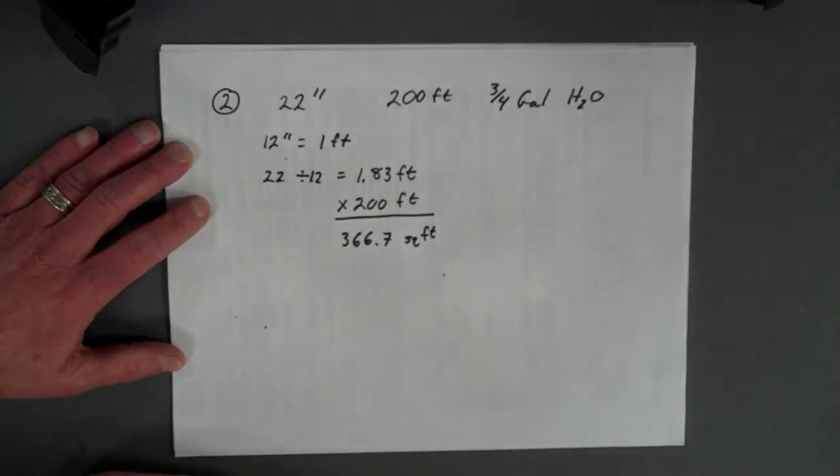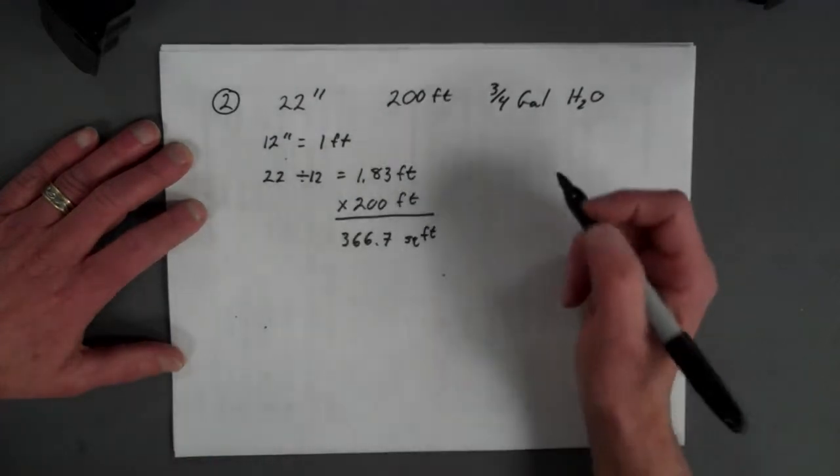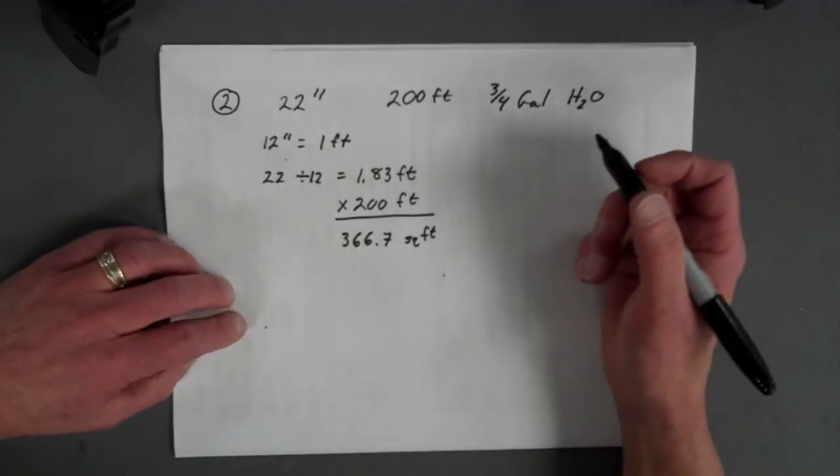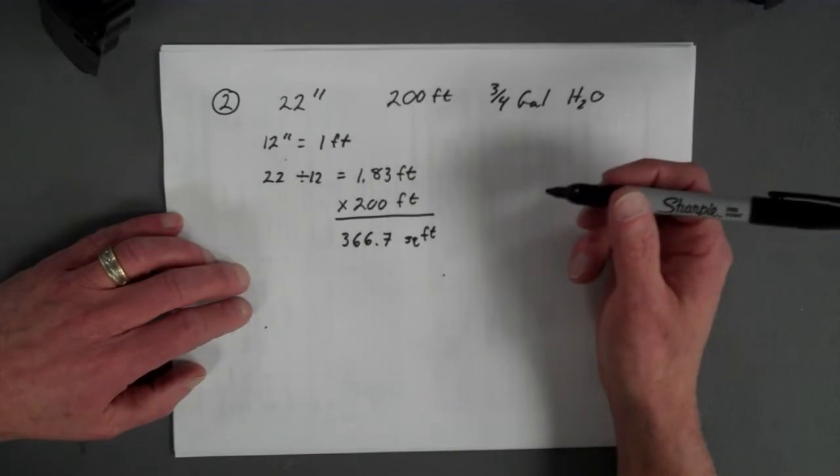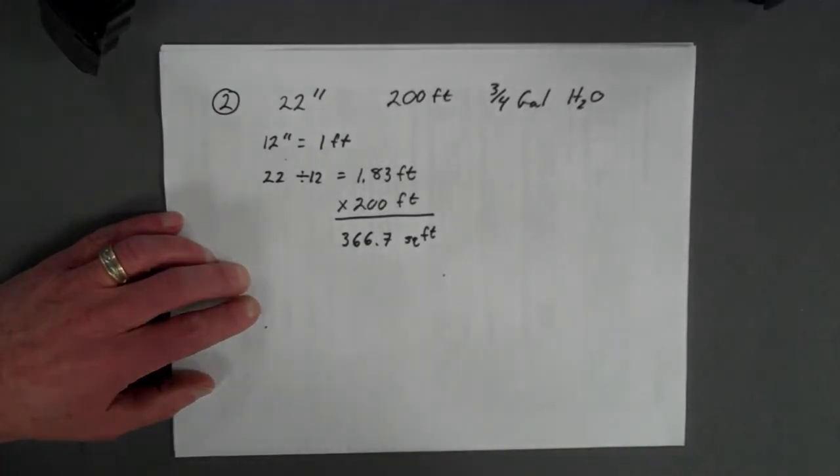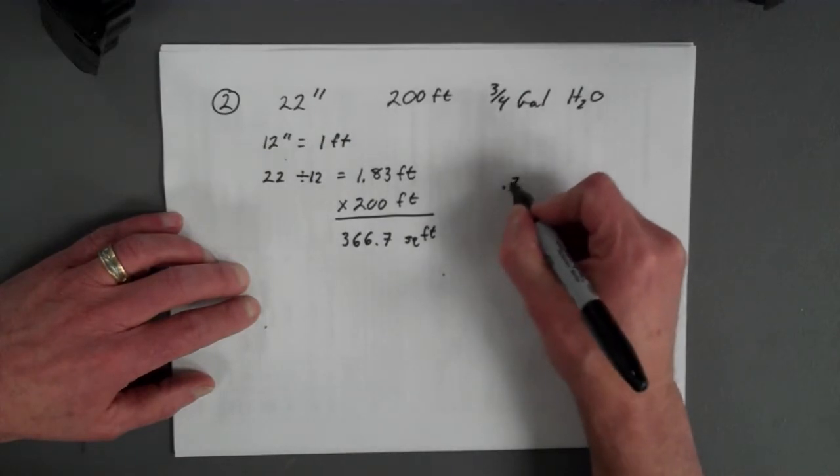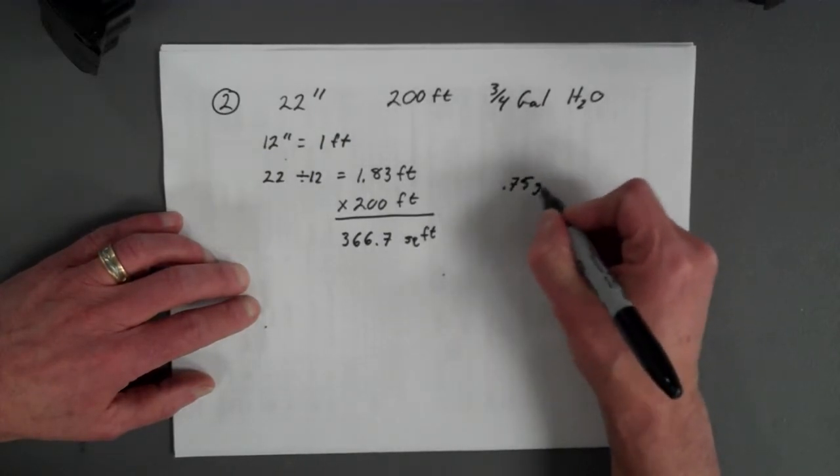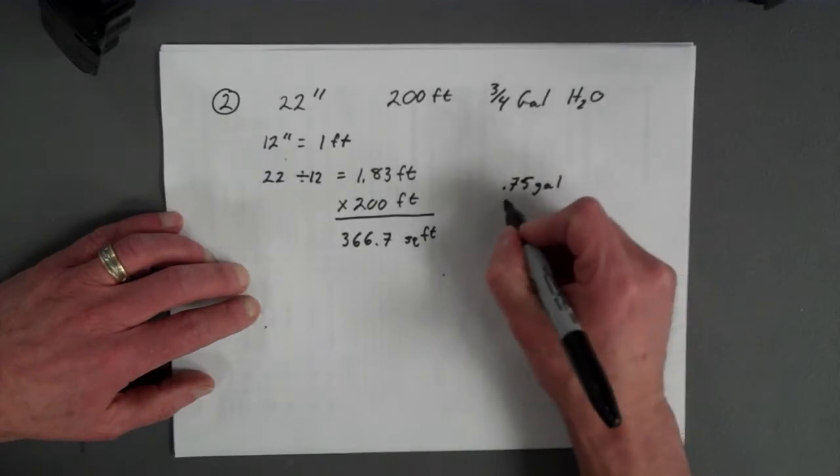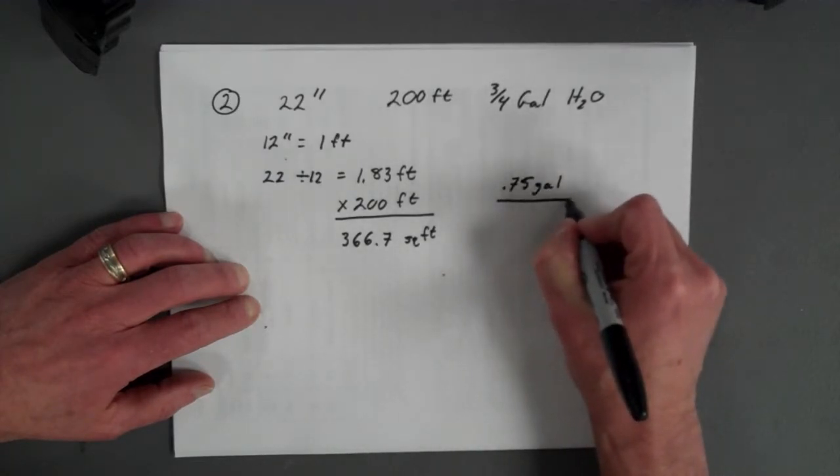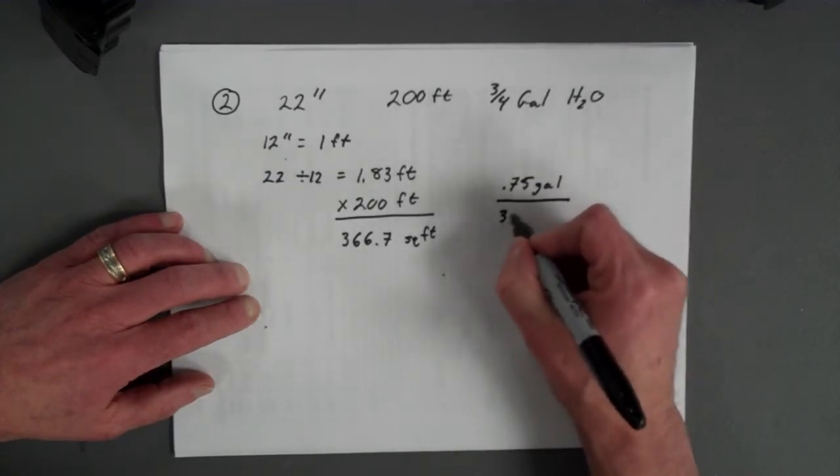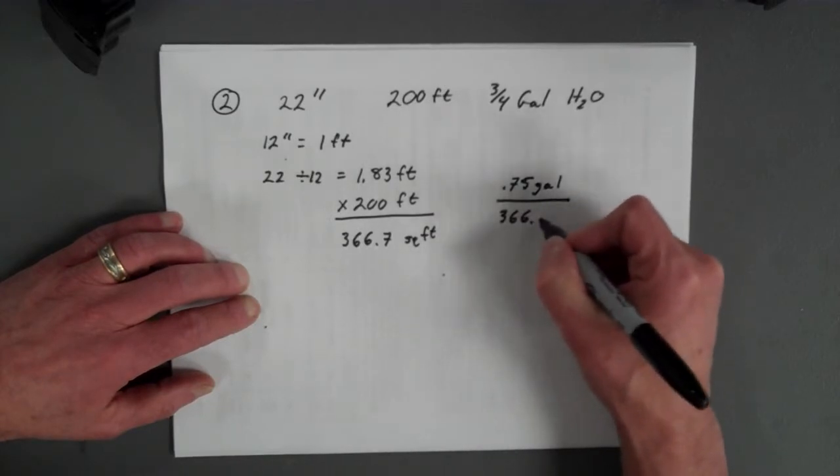So then step three is to set up this ratio to solve for gallons per acre. And we know we used three quarters of a gallon, so that's 0.75 is another way to say that, 0.75 gallons. And we apply that much in our 366.7 square feet test area there.